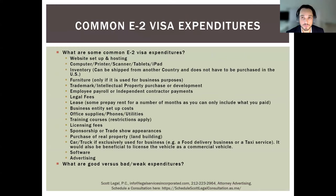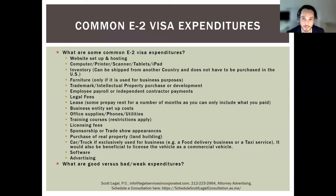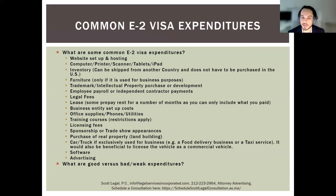About investment — some common good E2 visa expenditures: the first thing would usually be a lease for offices or a warehouse, depending on the business. What you want to make sure when including the lease and rent is that the money is spent — money must be at risk. For rent, you can pay a month or a few months in advance, or you can include the deposit. Just the lease agreement alone is not enough; the money must be at risk. We also commonly see computer equipment, printers, scanners, tablets, iPads, and phone plans. Website setup and hosting is very common as well.